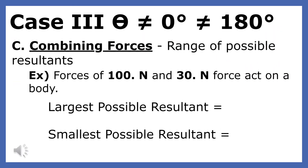The maximum resultant occurs at zero degrees and the minimum occurs at 180 degrees. We can use this fact to find the range of possible resultants for any two forces. If a 100-newton and 30-newton force act on a body, what is the range of possible resultants?